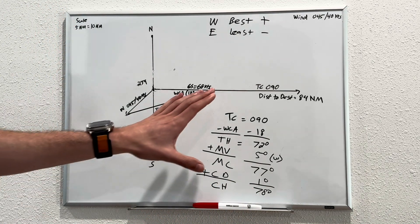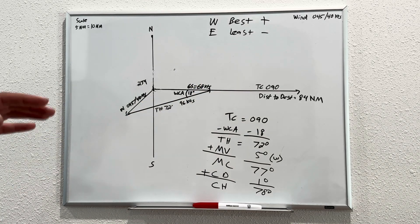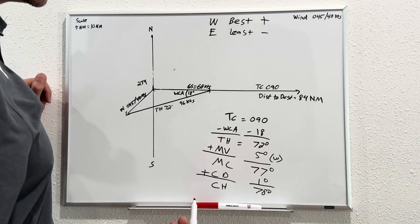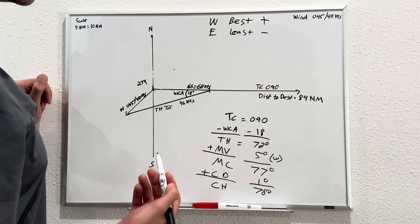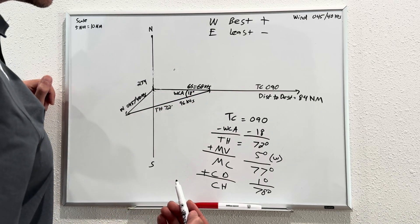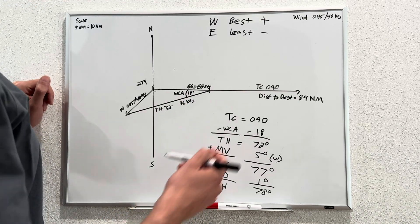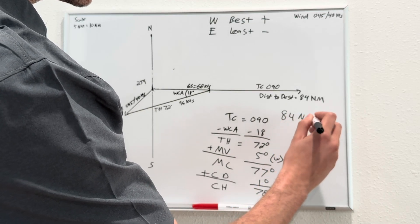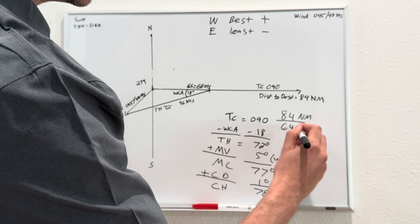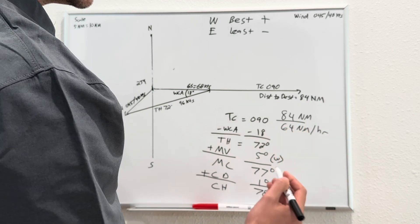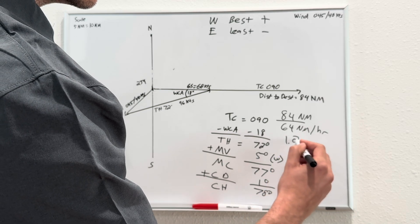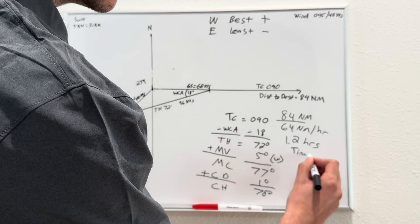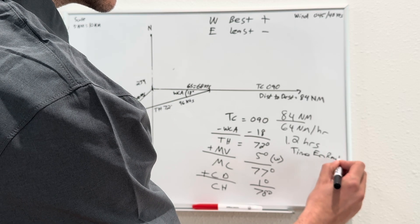That's all very useful information. Let's continue to derive a few more items from this. If our distance to destination is 84 nautical miles, and we're going across the ground at 68 knots, how long will it take for us to get to our destination? That's pretty simple. 84 nautical miles divided by 68 nautical miles per hour, and that'll give us approximately 1.2 hours. That's our time enroute.